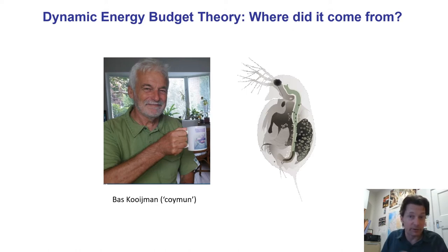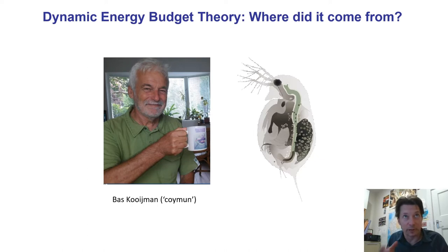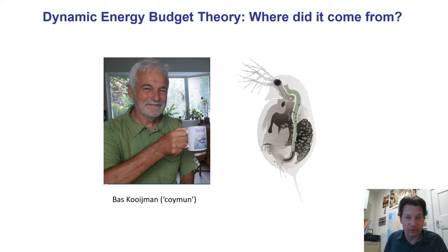If you're interested in metabolic theory, DEB theory is a very powerful way of approaching the same goals proposed within that broad umbrella. The theory came about when Bas Kooijman was working as a consultant and was given the problem of working out how reproduction in Daphnia is affected by toxins — an ecotox question. That led him to put together a full energy budget of Daphnia, which then led to a rather broad theory that applies to any kind of organism.